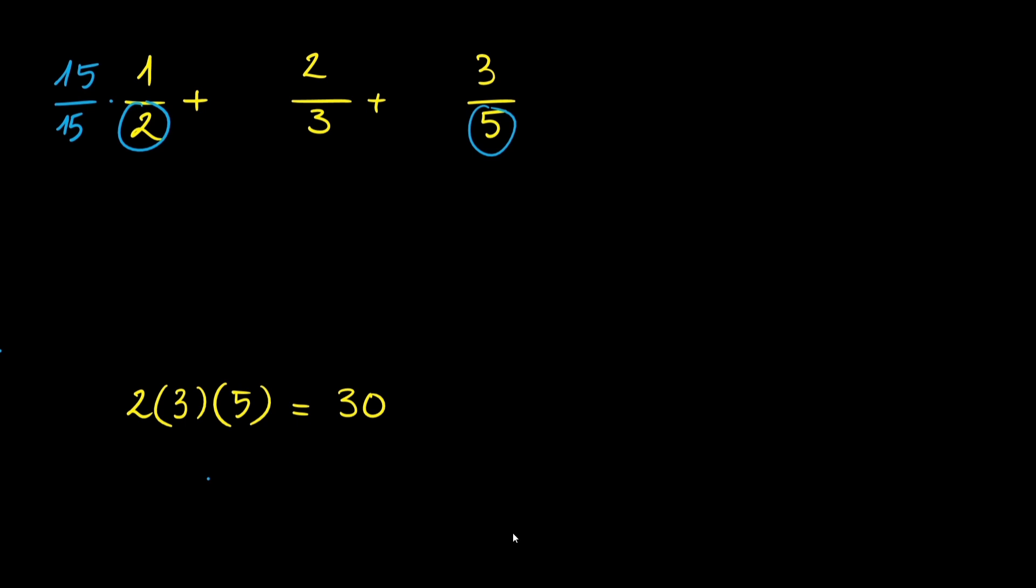Now for the third fraction, I'm going to use the denominators of the other two fractions 2 and 3. So I'm going to multiply the third fraction by 2 times 3, which is 6.